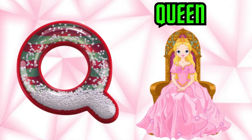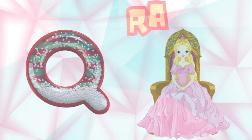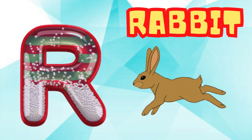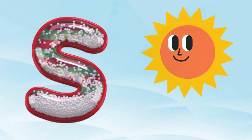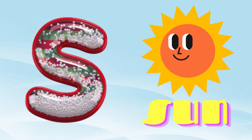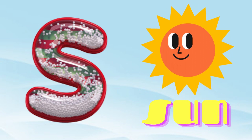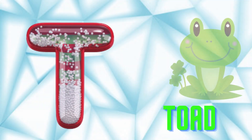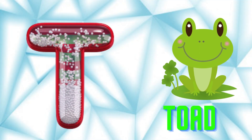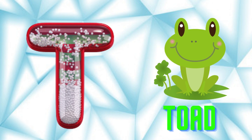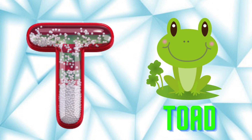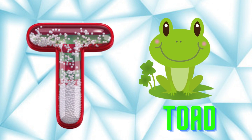Q is for Queen, Q-Q-Queen. R is for Rabbit, R-R-Rabbit. S is for Sun, S-S-Sun. T is for Toad, T-T-Toad.